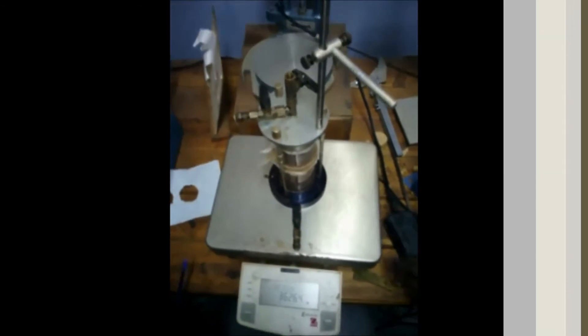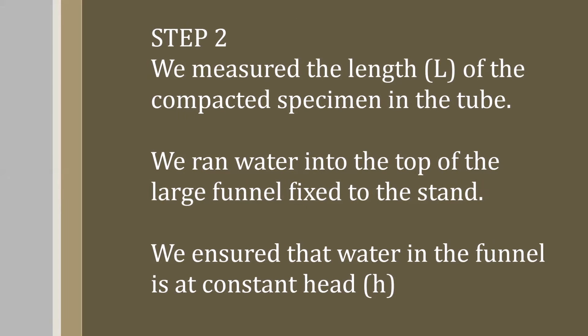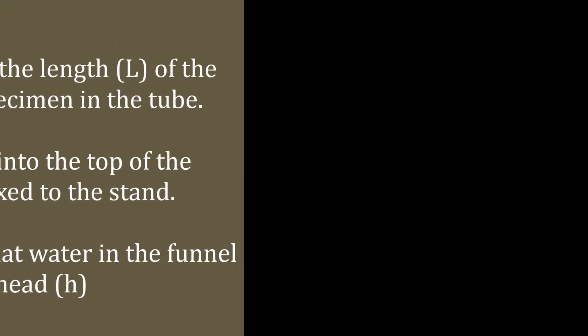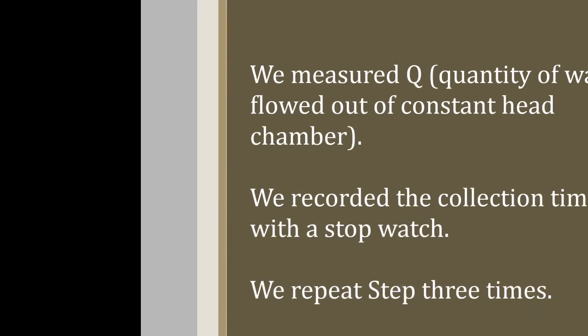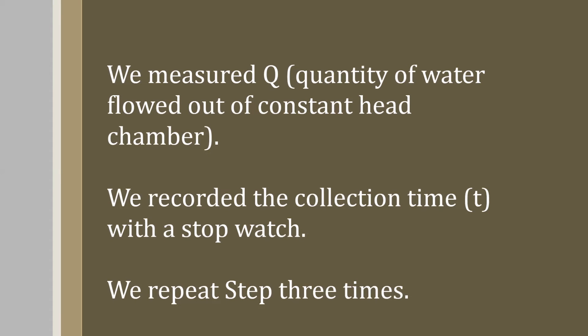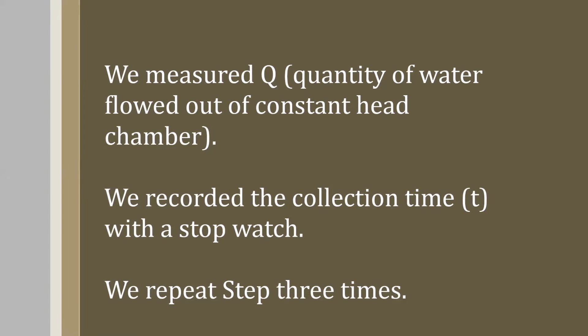Then we measured the quantity Q, which is the amount of water that passed through the tubes and through the specimen. The water flows out in the constant head chamber. We collected this amount of water so that we use it to determine the permeability constant K using the formula, which you will see at the end of this video.